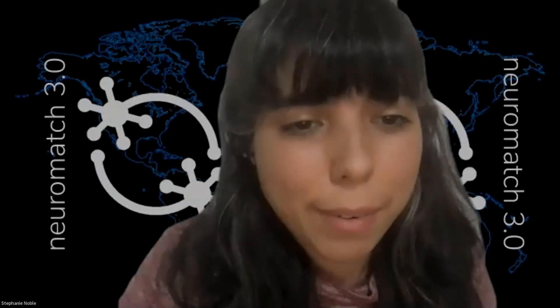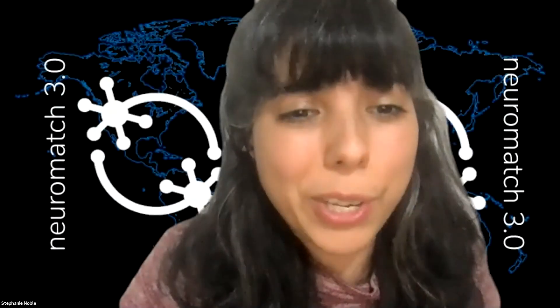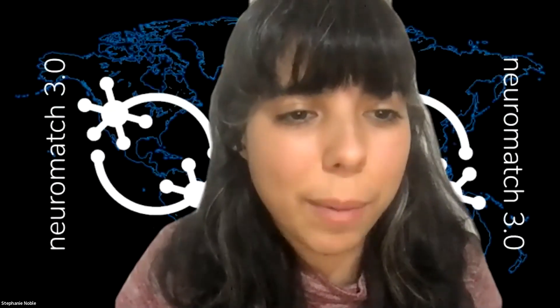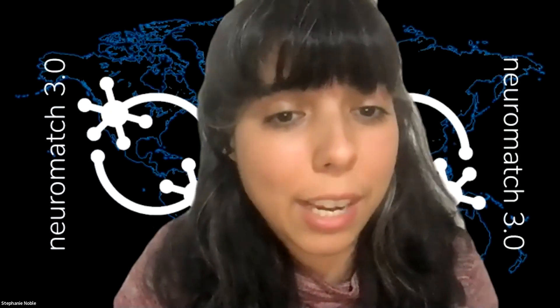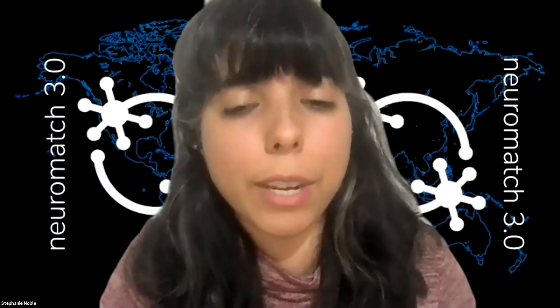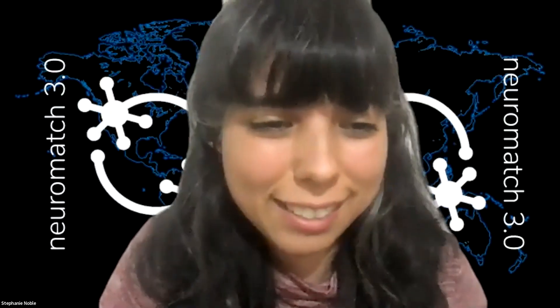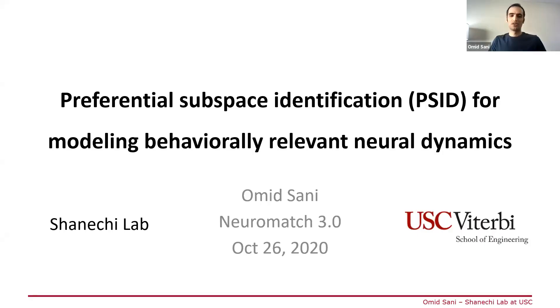Next up is Omid Sani from USC. He'll be talking about preferential subspace identification for modeling behaviorally relevant neural dynamics. Thank you. Hello, everyone. I'm Omid Sani, a postdoc at the Shanachi Lab at USC, and I'm going to talk about this method, PSID, for modeling behaviorally relevant neural dynamics.